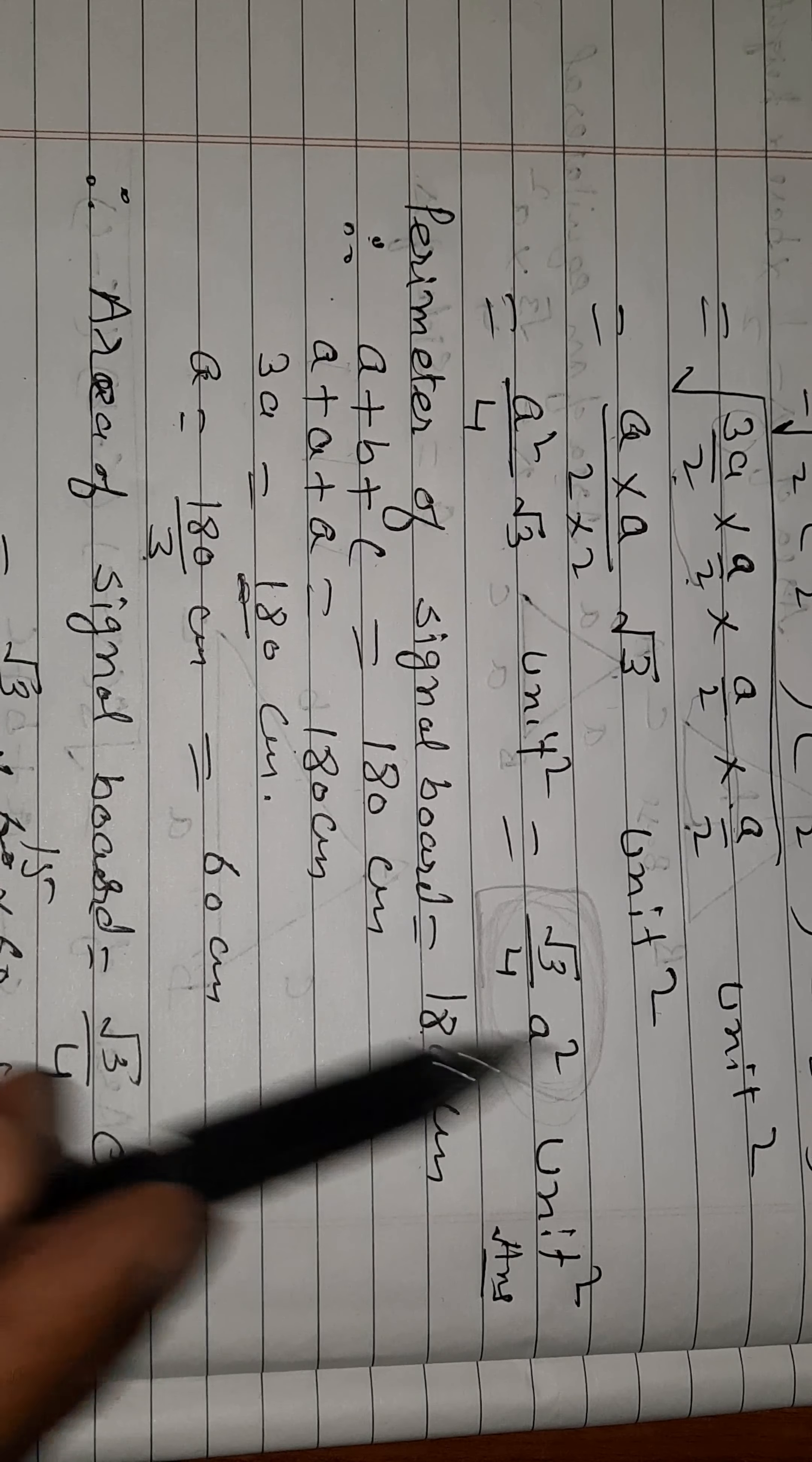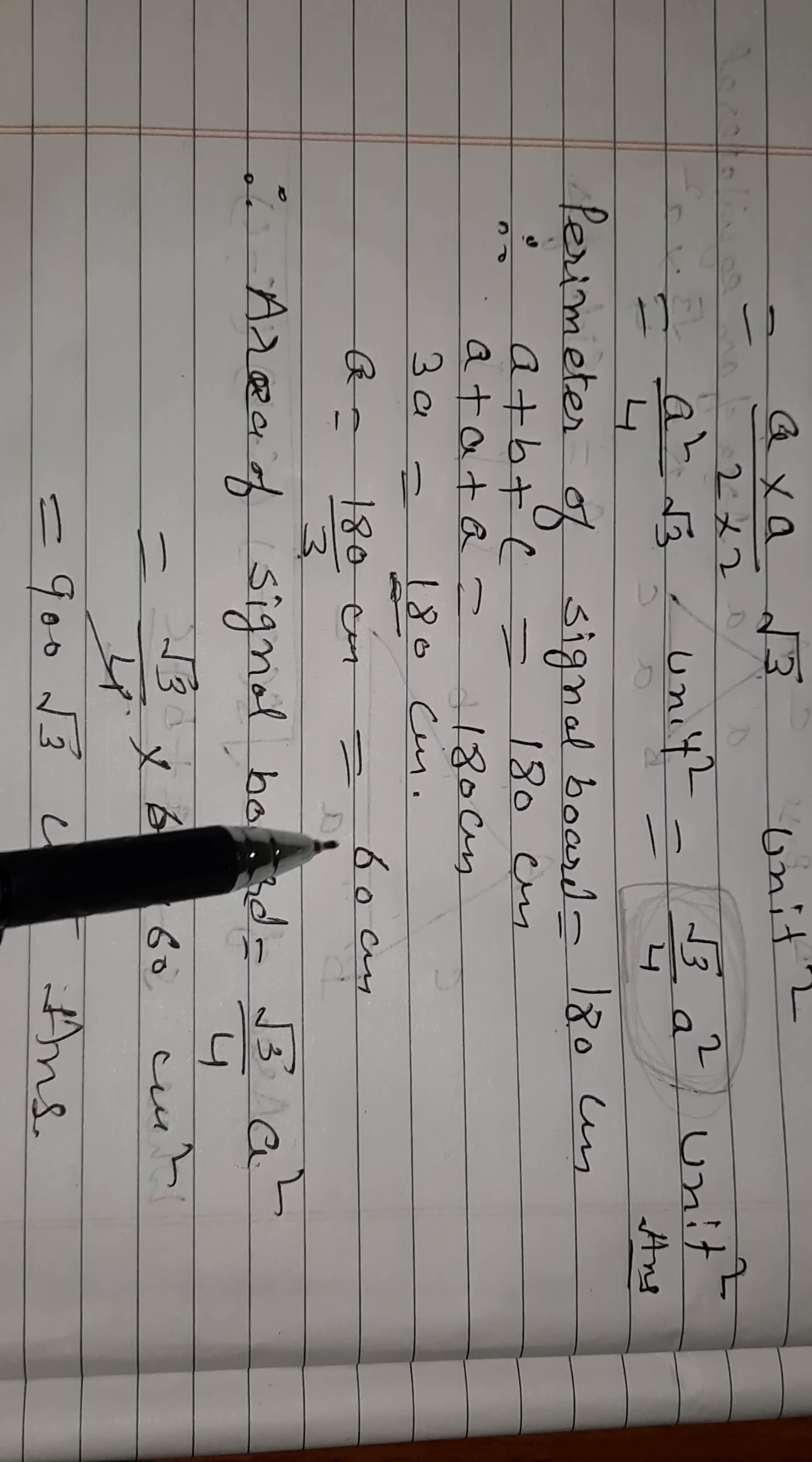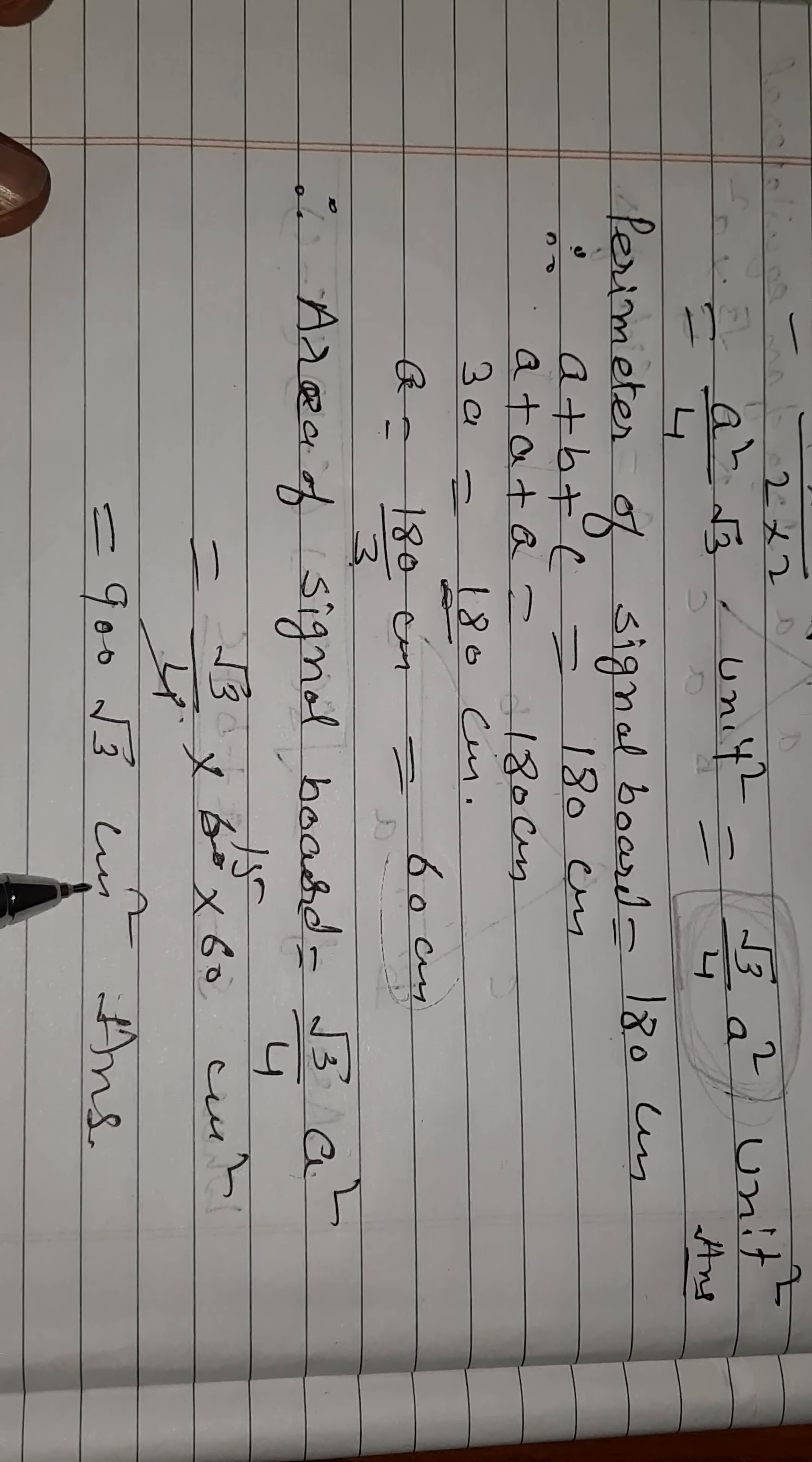Area of the signal board: we have already found the formula. Area = (√3/4)a², where a is the side of the signal board. The side is 60 cm. So area = (√3/4) × 60 × 60. Canceling, 15 × 60 = 900√3 cm².